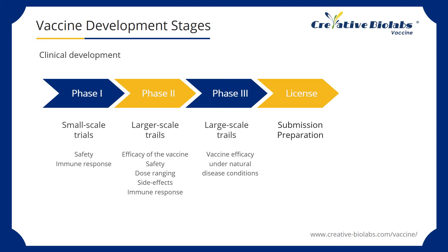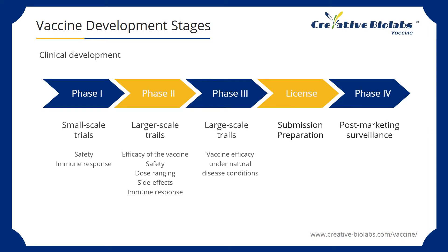The final Phase IV happens after the vaccine has been licensed and introduced into use. Also called post-marketing surveillance, this stage aims to detect rare adverse effects as well as to assess long-term efficacy. These phases proceed in a stepwise fashion. Only vaccine candidates that are determined to be safe and capable of inducing an immune response advance to the next phase.